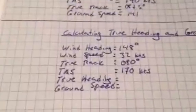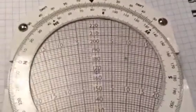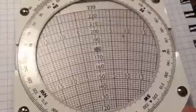Then we move this down to—what was it—170 knots was our true air speed.